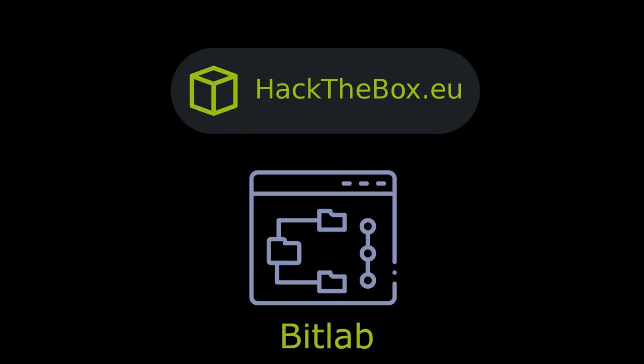This is IPSec doing BitLab from Hack The Box — a box centered around GitLab, the open-source version of GitHub. Running Gobuster reveals a directory with credentials to log in. Two repositories are found: one is the website source code and the other is a post hook that pushes code to the web server. You upload a PHP reverse shell to get a foothold. There are two privesc paths: one using a sudo git pull with a post-merge hook, the other extracting PostgreSQL credentials and reverse-engineering a Windows executable to find the root password hardcoded in it.